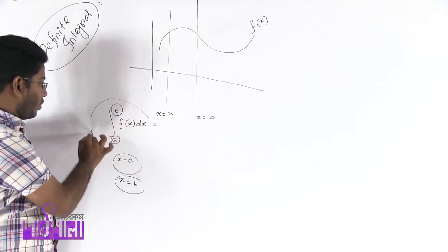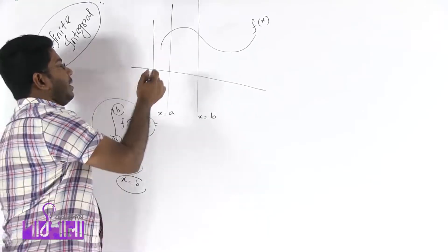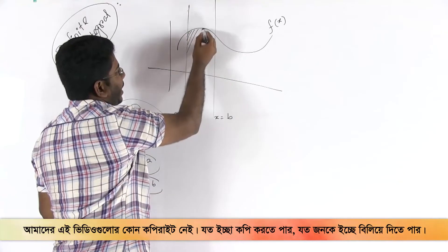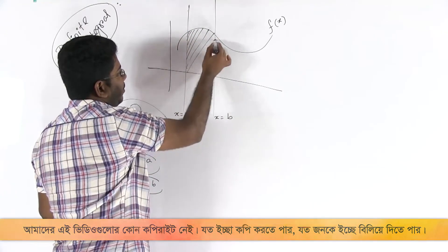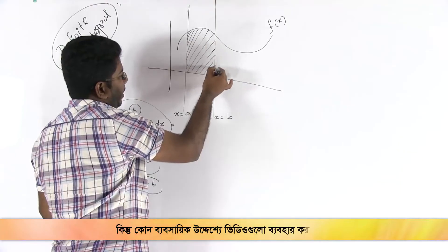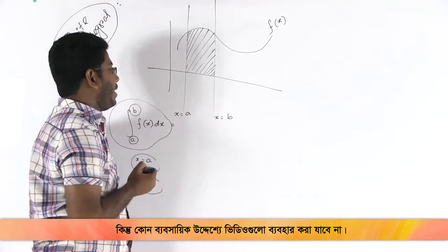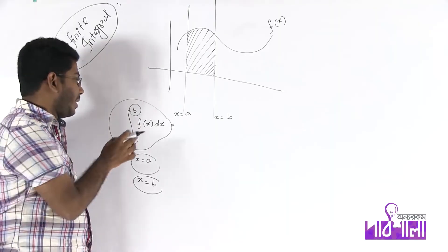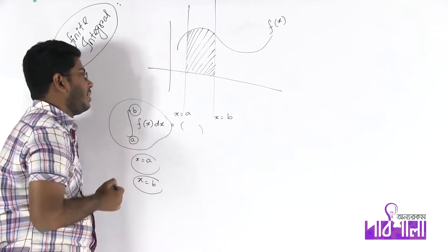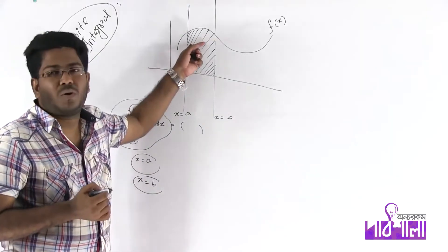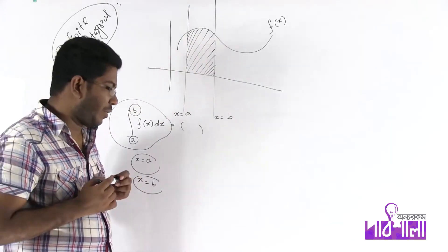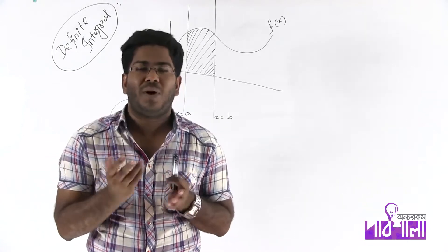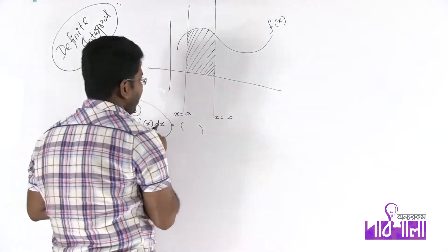The most important notation is that a function of a function — if I mark the function of a function. I also have to do the same thing. I believe that the integration will be transferred to a sub f, and the integration will be transferred to a sub f.